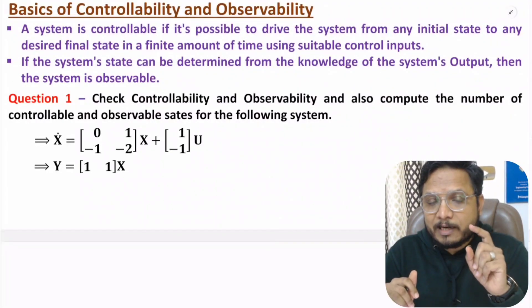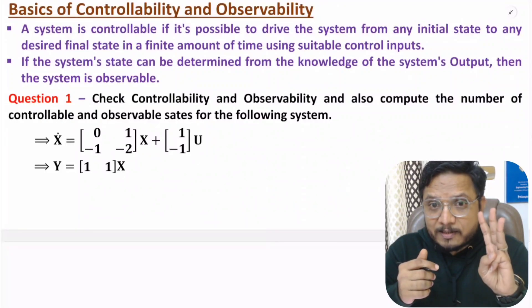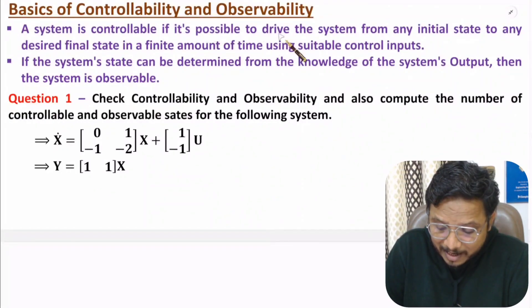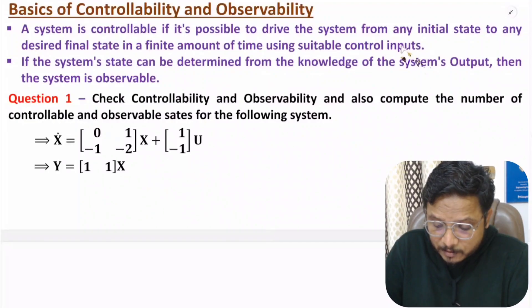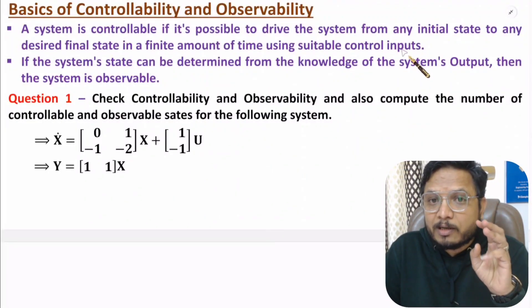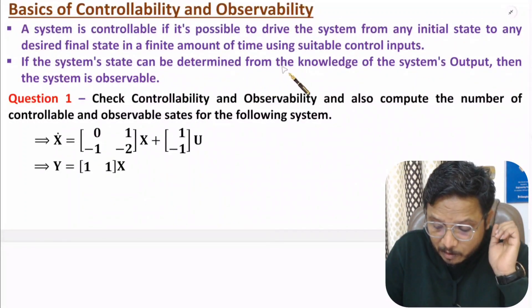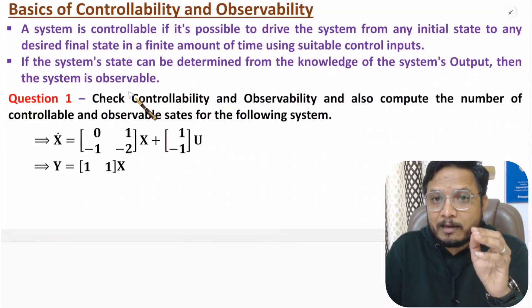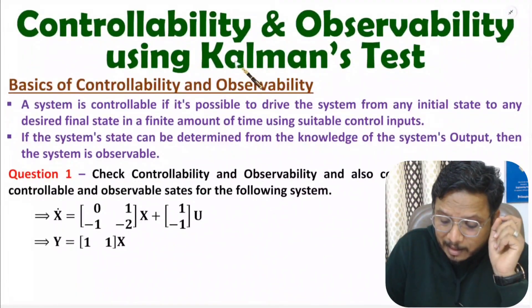If you want to understand observability, that you can understand based on output. From output, if we can predict all these states, then you can say system is observable. So system is controllable if it is possible to drive the system from any initial state to any desirable final state in a finite amount of time using suitable control inputs. If the system state can be determined from the knowledge of the system's output, then you can say system is observable. That I will explain using Kalman's test.